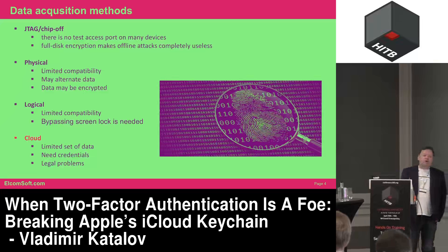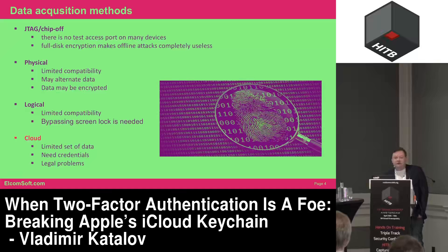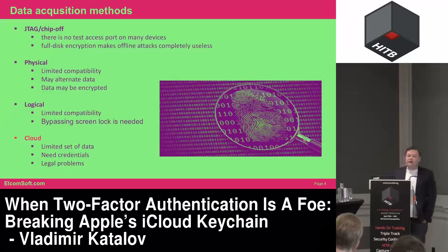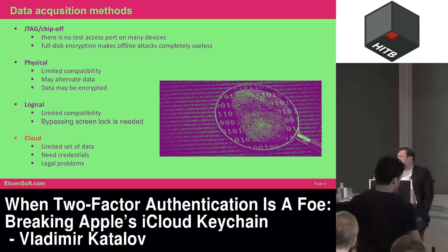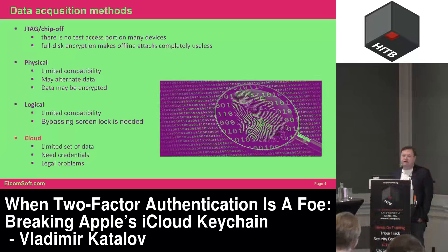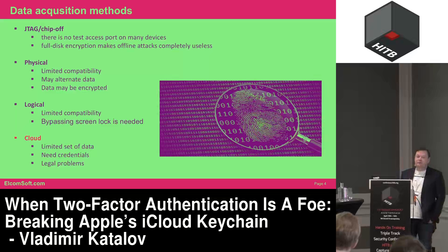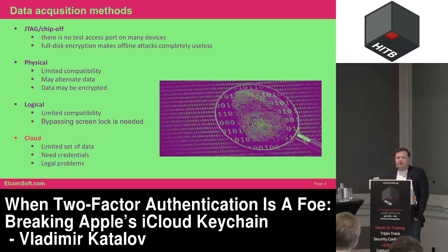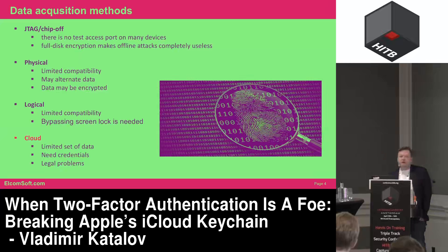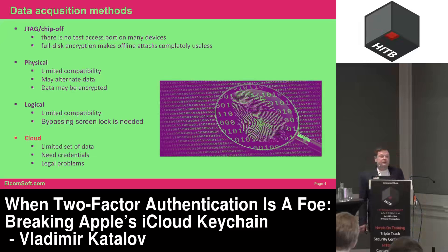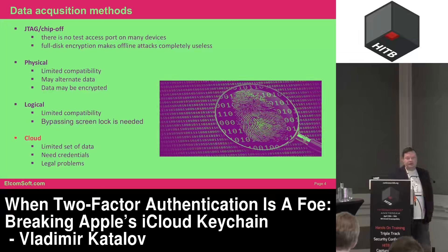With JTAG or chip-off, you create a copy of the memory chip of the device and get a bit-by-bit image, though there are quite a lot of problems. You have to connect to the JTAG debug port, which is available on some smartphones, or you can take the chip off and insert it into the controller and copy the whole memory. But the problem is that most modern smartphones use encryption. For iPhones, it started with iPhone 4 and chip-off is completely useless.